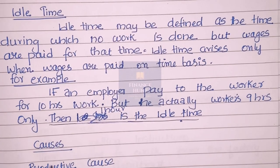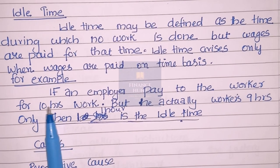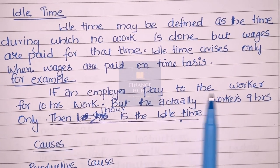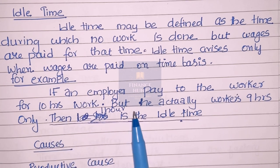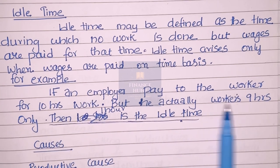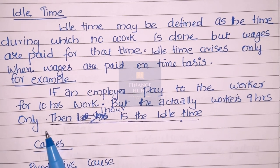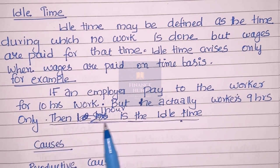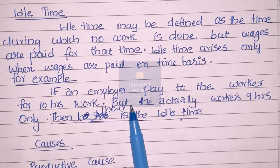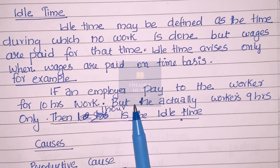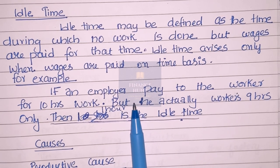If an employer pays a worker for 10 hours of work, but the worker actually works only 9 hours, then 1 hour is the idle time.